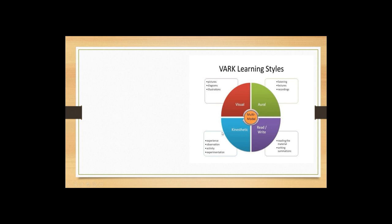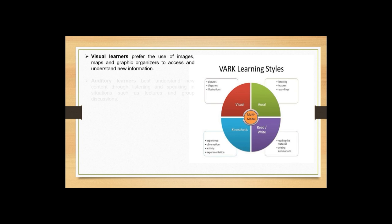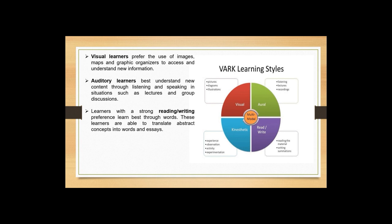First, visual learners prefer the use of images, maps, and graphic organizers to access and understand new information. Auditory learners best understand new content through listening and speaking, in situations such as lectures and group discussions.